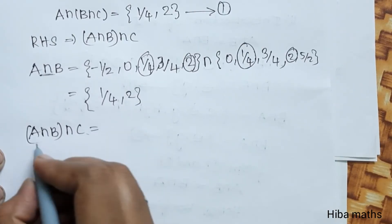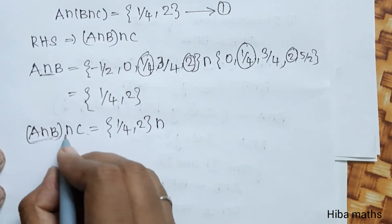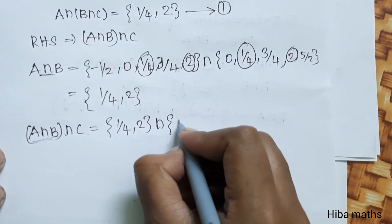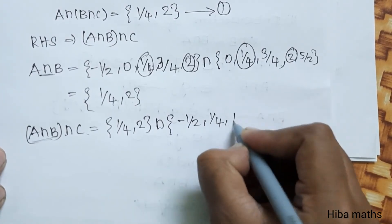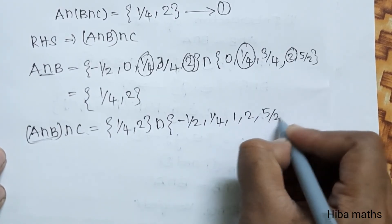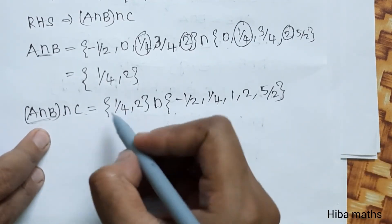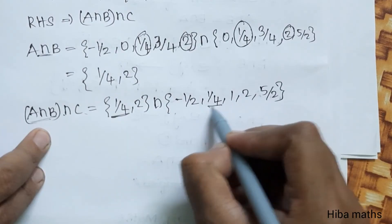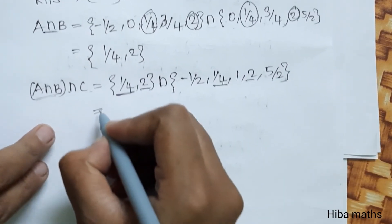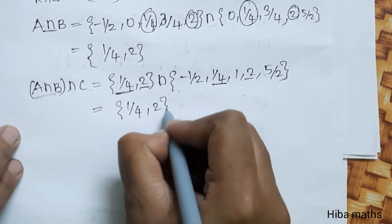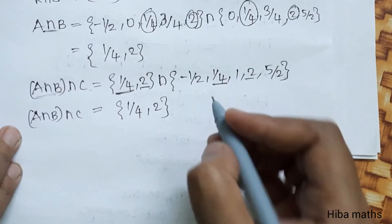Now (A intersection B) intersection C. A intersection B = {1/4, 2} intersection C = {-1/2, 1/4, 1, 2, 5/2}. The common values are 1/4 and 2. So (A intersection B) intersection C = {1/4, 2}. This is the right-hand side result.